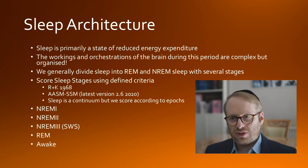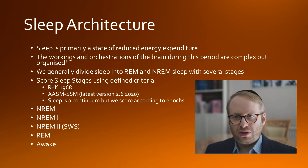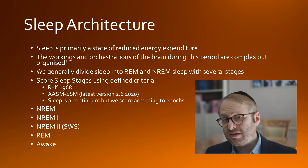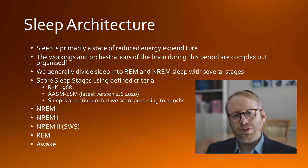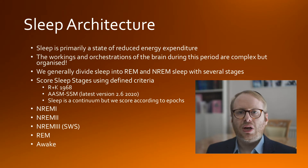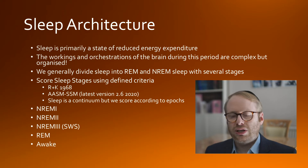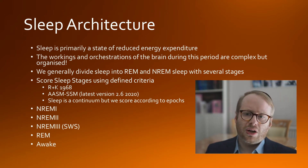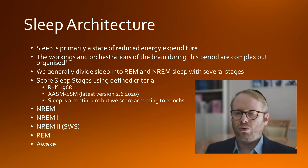The different sleep stages have very defined scoring criteria. The first internationally agreed criteria were the Rechtschaffen and Kales 1968 sleep scoring manual. That has been updated by the American Academy of Sleep Medicine sleep scoring manual, with the first major update in 2007 and subsequent updates ever since.